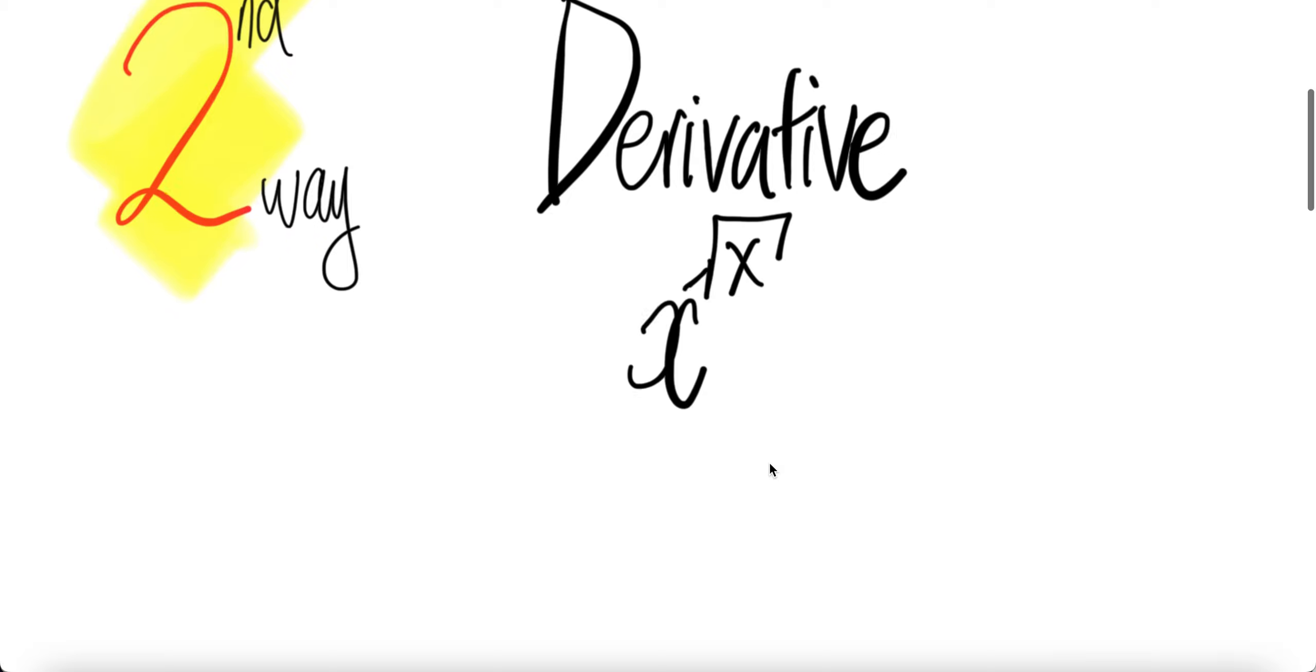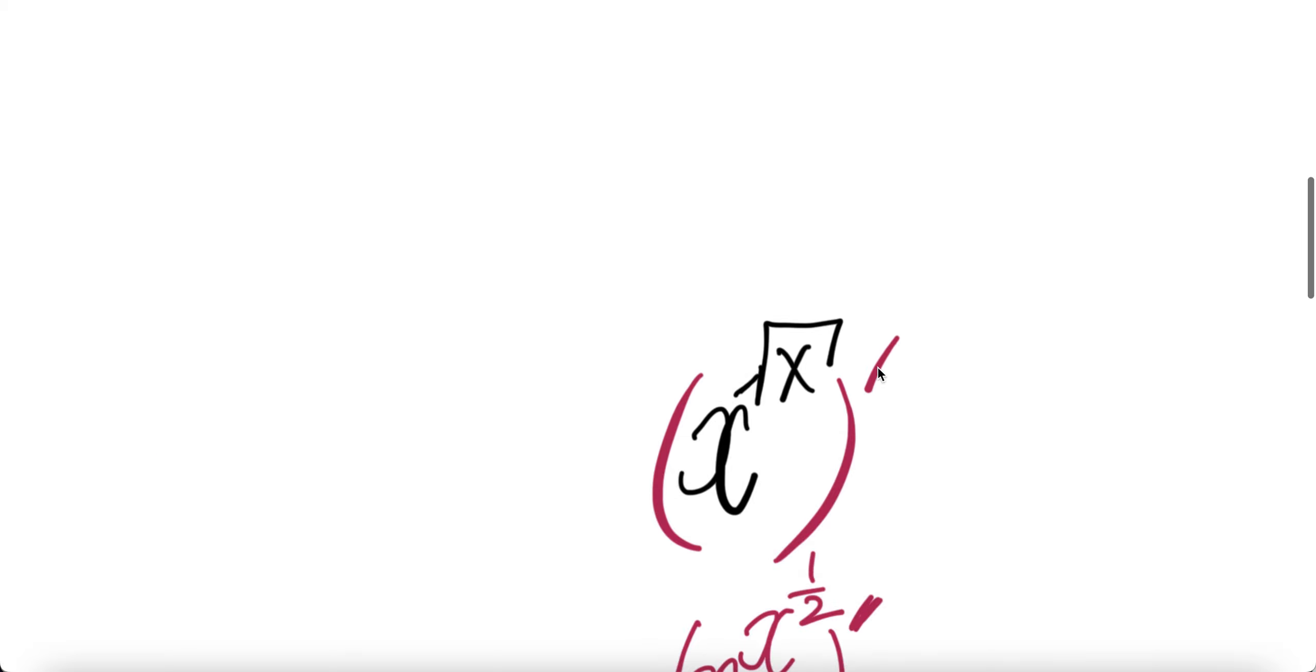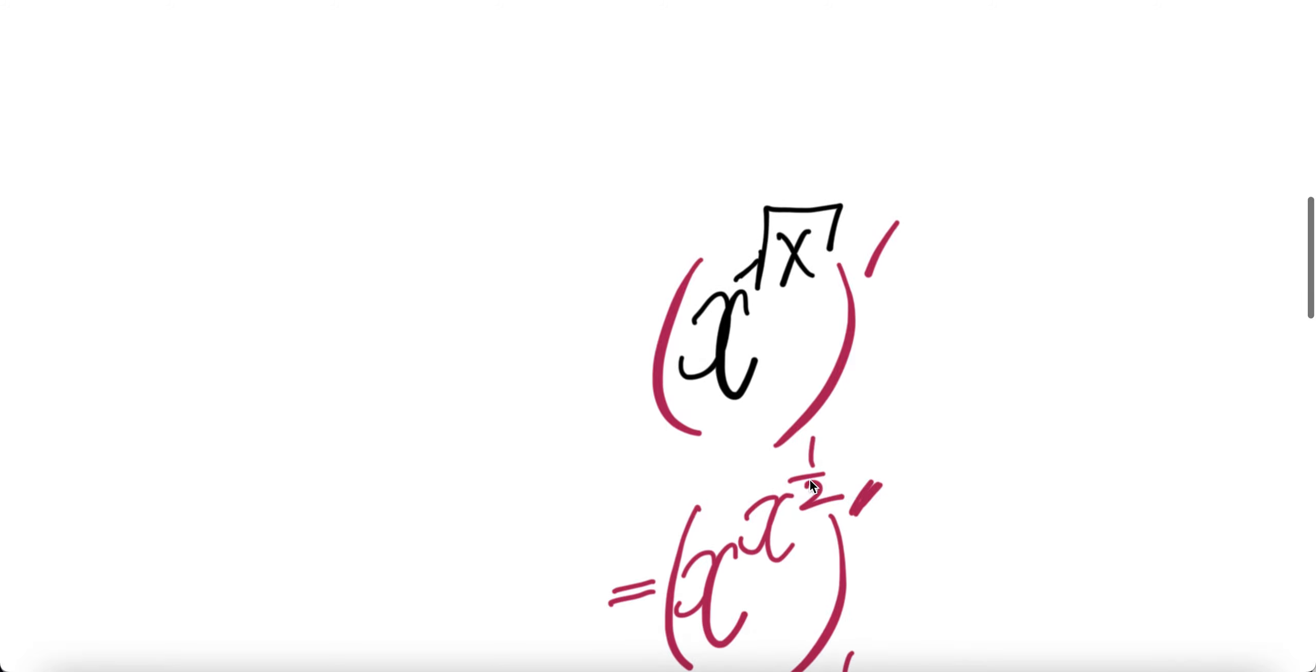Second way to get the derivative of x to the power √x. We have to get the derivative of x to the power √x. Write √x as x to the power half.